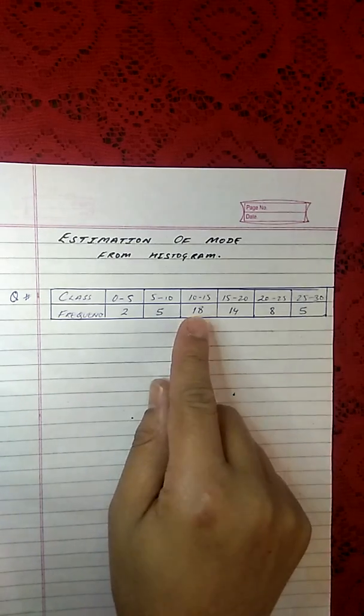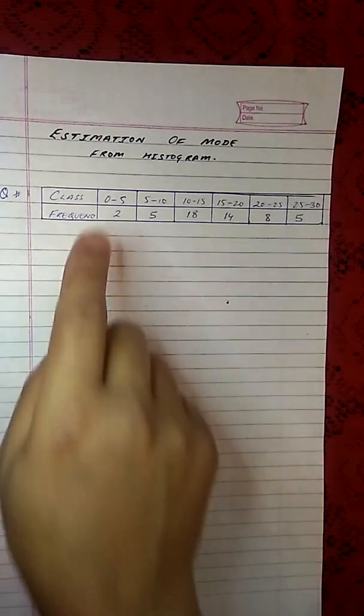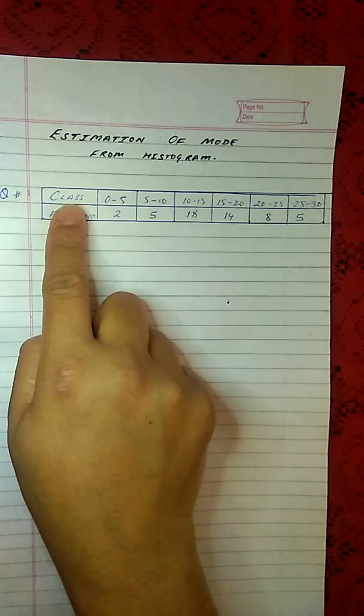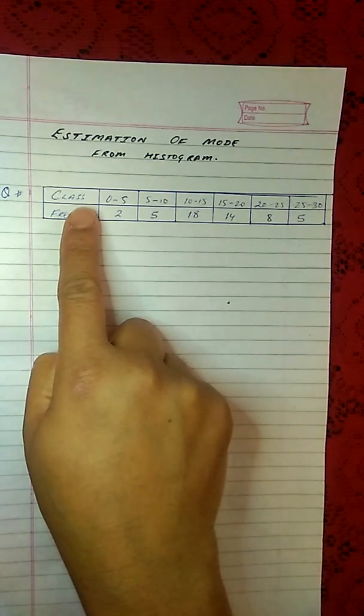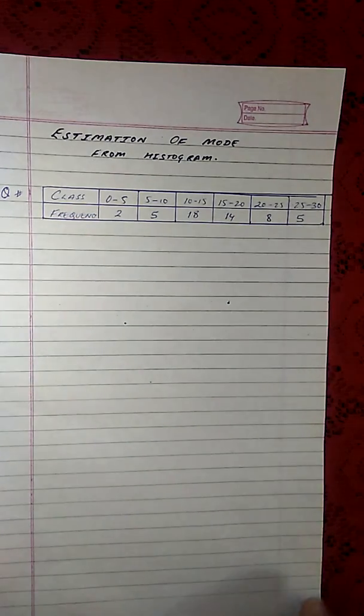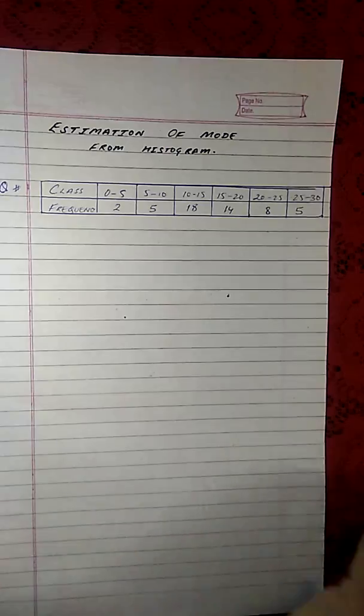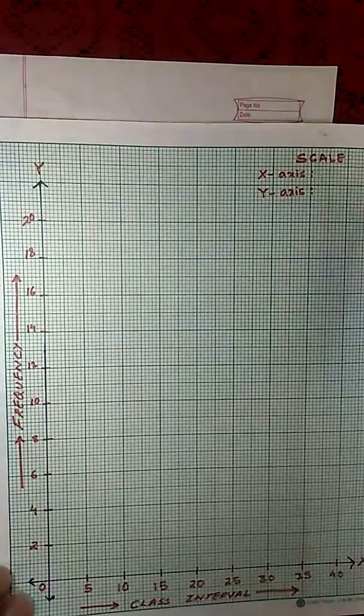We need to keep this in mind before we start plotting on the graph paper. We shall plot the class interval along the x-axis of the coordinate system as abscissa and we will plot the frequency along the y-axis as ordinate. Now I have already prepared this graph here.